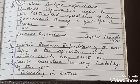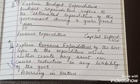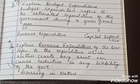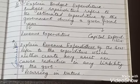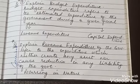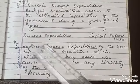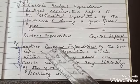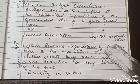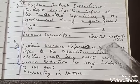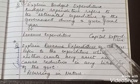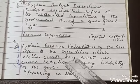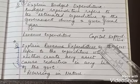Government expenditure refers to all the estimated expenditures that the government incurs during a fiscal year. There are two categories of expenditures: revenue expenditure and capital expenditure. Revenue expenditure does not affect assets or liabilities, whereas capital expenditure does affect assets and liabilities. Let us understand these two categories in detail.